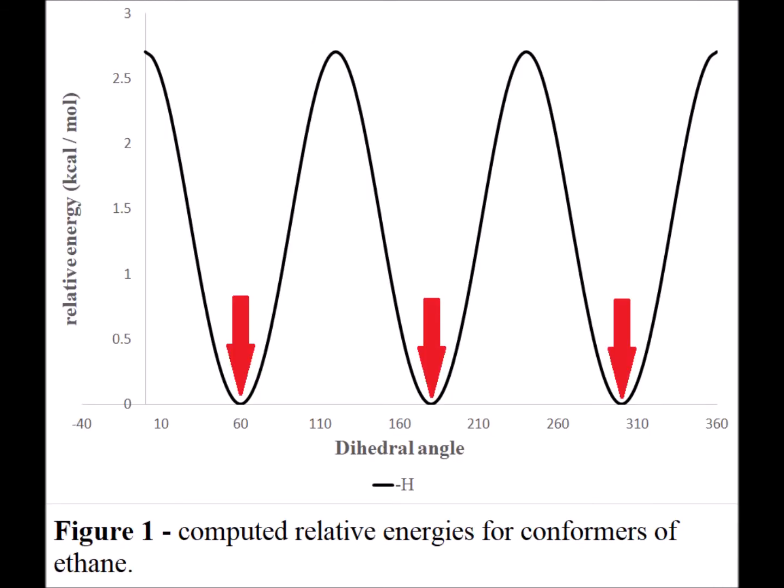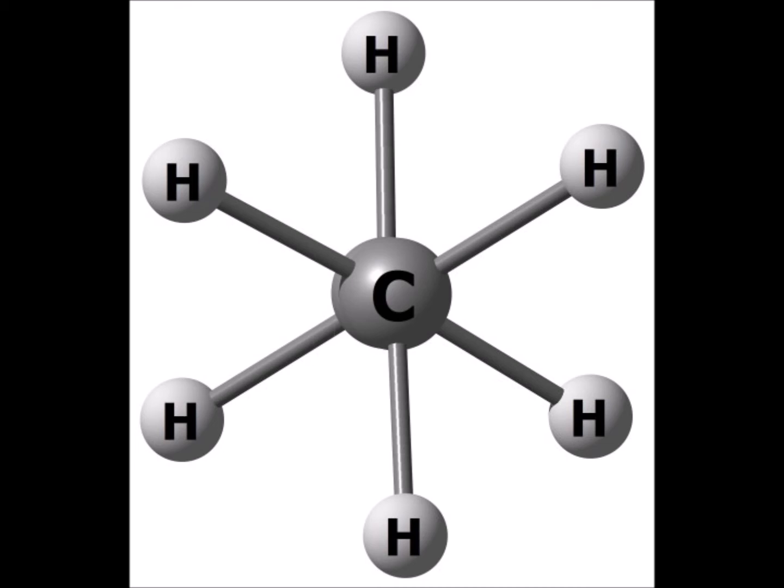We also notice that there are 3 minima, pointed out by the red arrows, at 60, 180, and 300 degrees for the dihedral angle. This corresponds to the so-called staggered conformation, where the hydrogens attached to the back carbon seem to be exactly bisecting the angles formed by the hydrogens attached to the front carbon.